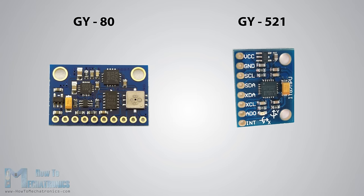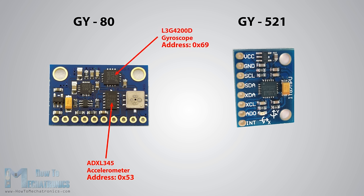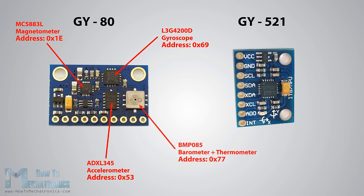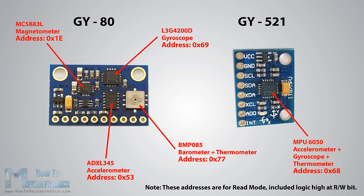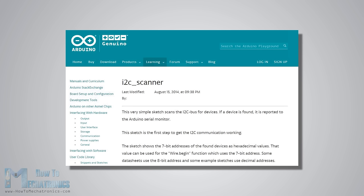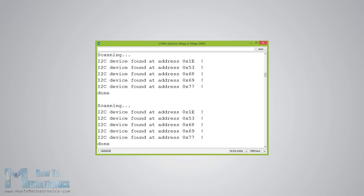In order to communicate with these chips or sensors we need to know their unique addresses, which we can find from the datasheets. For the GY80 breakout board we have the following four addresses: hexadecimal 53 for the three-axis accelerometer, hexadecimal 69 for the three-axis gyro, hexadecimal 1A for the three-axis magnetometer, and hexadecimal 77 for the barometer and thermometer sensor. For the GY521 breakout board we have only one address: hexadecimal 68. We can also check the addresses using the I2C scanner sketch found on the Arduino official website, and if we upload and run that sketch we will get the addresses of the connected devices on the I2C bus.